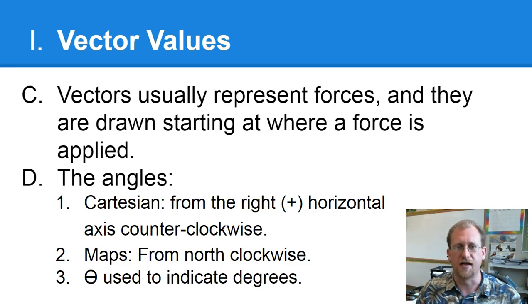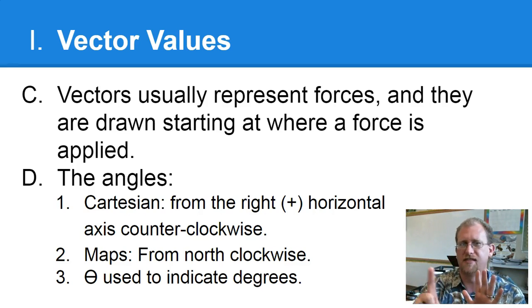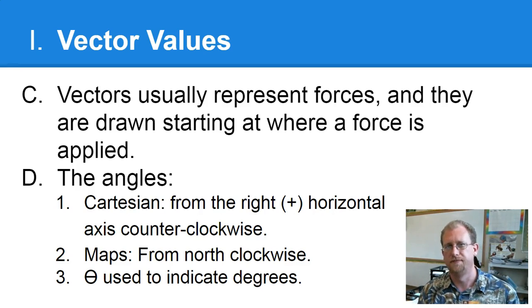Vectors usually represent forces like I just had the illustration there. And they're drawn starting at where a force is applied. So you wouldn't draw that arrow pointing on a car if you're pushing the car. You would draw the arrow with the butt end of the arrow where the force is happening, where you're pushing on the car. So the arrow would be like inside the car. The butt end of the arrow is where the force is applied and then the arrow extends to represent the force. Does that make sense?